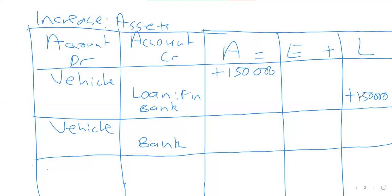If we are repaying the loan, that's a different transaction. When repaying, the installment you pay monthly is an expense to the business because money is flowing out. We will credit bank — because money is flowing out to repay the loan — and we will debit loan. So when paying, the loan account is debited and bank is credited.